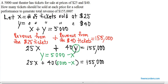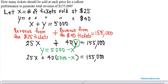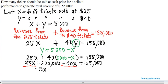Now we have an equation with one variable in it, which we know how to solve. Let's get rid of the parentheses by distributing the 40. 40 times 5,000 is 200,000. 40 times negative X is negative 40X. Now we have like terms on the left side. Combining the 25X with the minus 40X gives us negative 15X. You still have the plus 200,000 and equals the 155,000.